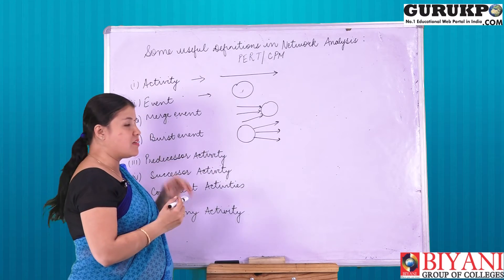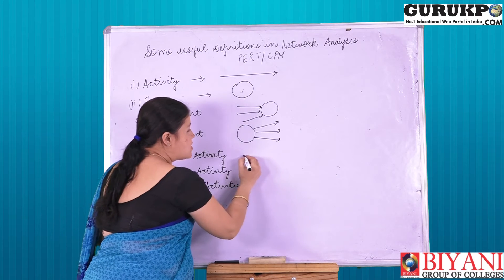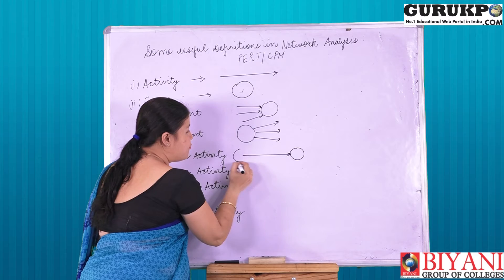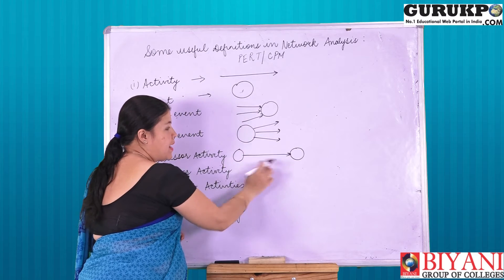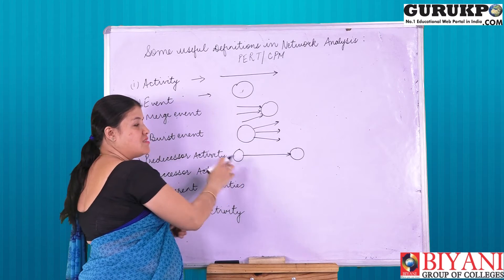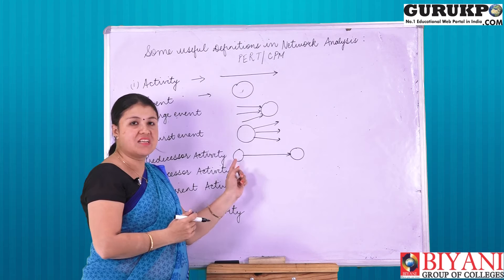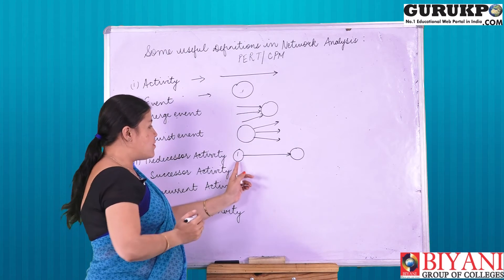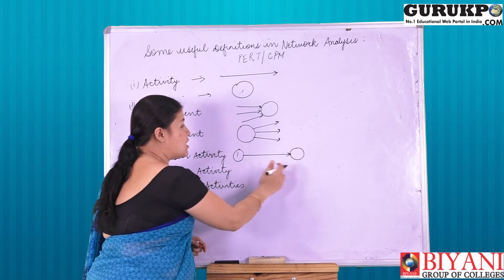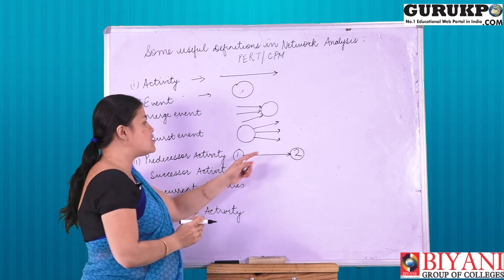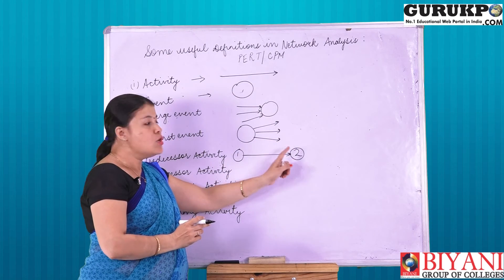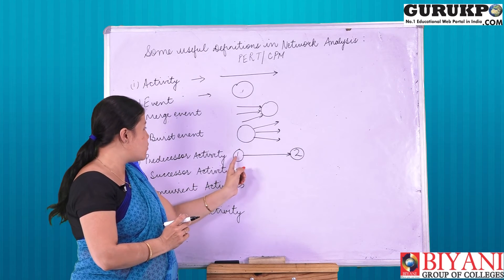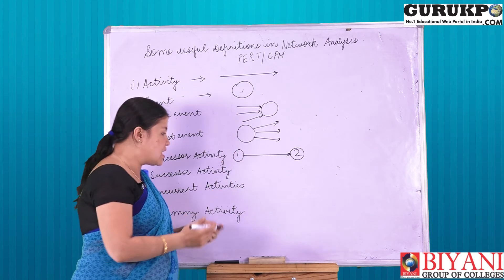Next is predecessor activity. When we start an activity, the activity that is followed by another activity is known as the predecessor. That means, before completing a particular activity — as suggested by number one — before completing the first activity, we cannot start the next activity, that is the second. So for the second event, activity one is known as the predecessor activity.